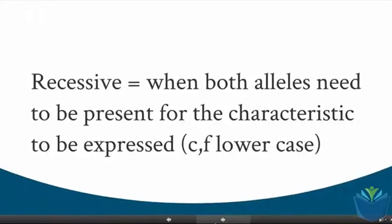Which takes us on to recessive, when both alleles need to be present for the characteristic to be expressed. So you need two of them. An example of that is cystic fibrosis. You need both cystic fibrosis alleles in order to have the condition.